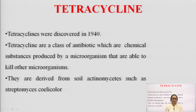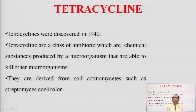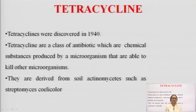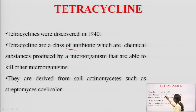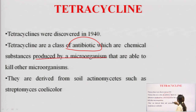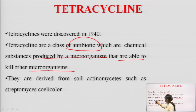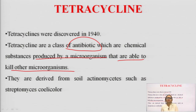If we talk about tetracyclines and their discovery, they were discovered in 1940 — along with the discovery of penicillin and streptomycin. They are a class of antibiotic, which are chemical substances produced by microorganisms that are able to kill other microorganisms. Almost all antibiotics obtained from natural sources come from microorganisms.